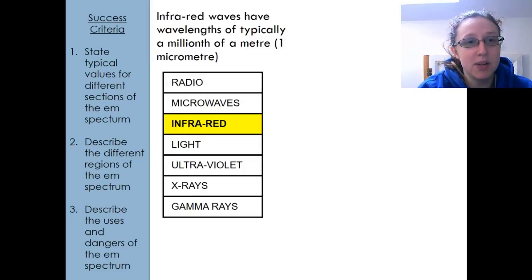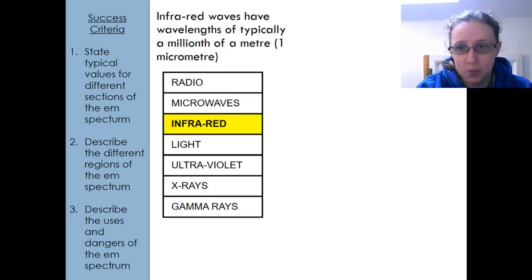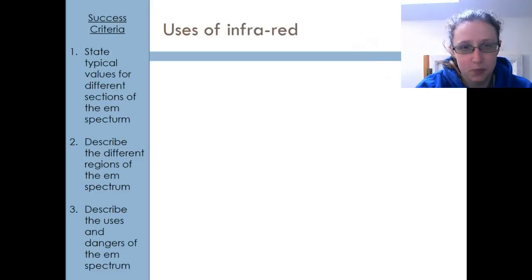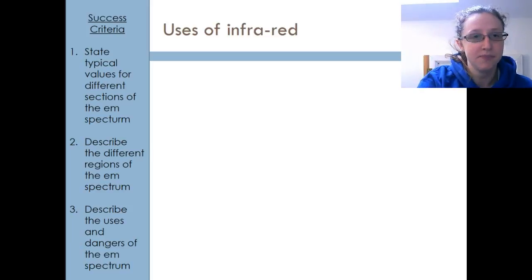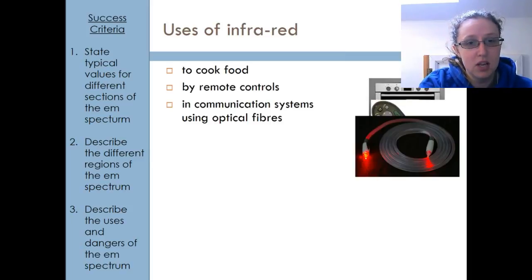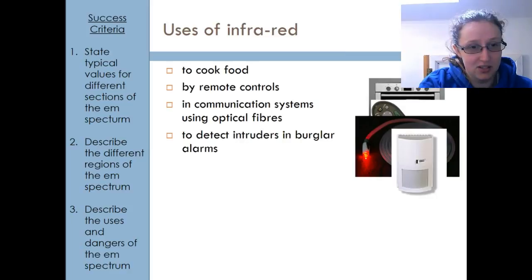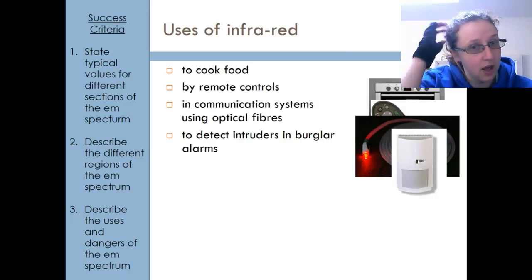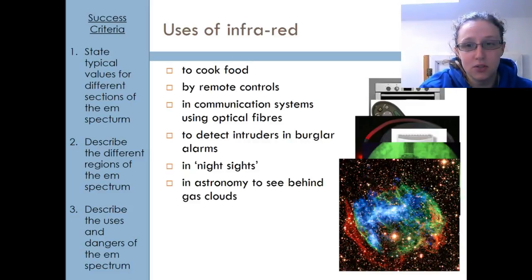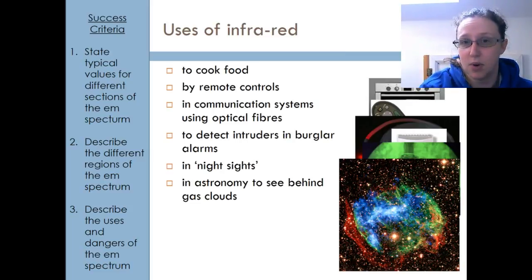Infrared waves typically have lengths of a millionth of a meter — about one micrometer. You've probably seen infrared photography, or thermograms as they're called. Uses of infrared include cooking food (that's how your convection oven works), remote controls, fiber optics, intruder alarms (your burglar alarm will have an infrared sensor), night sights and night vision goggles, and astronomy — helping us see beyond things that are emitting different types of wavelengths.